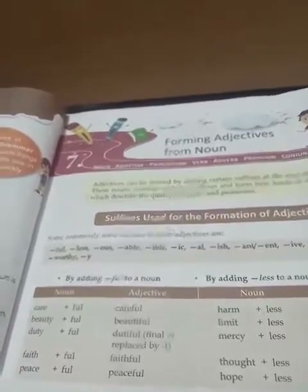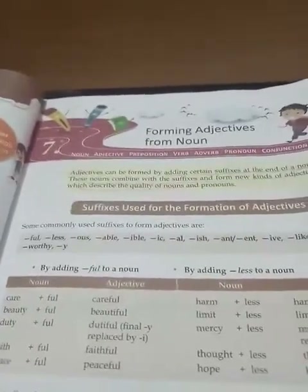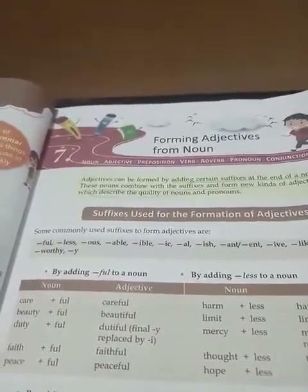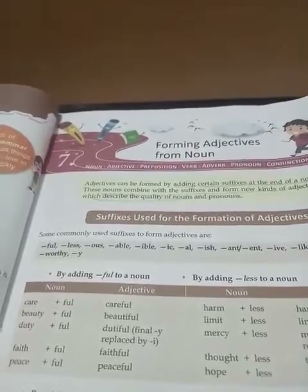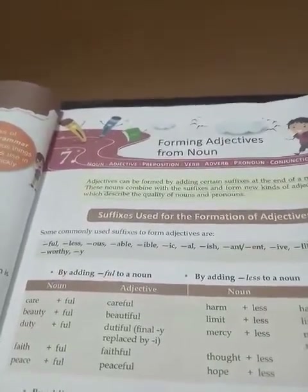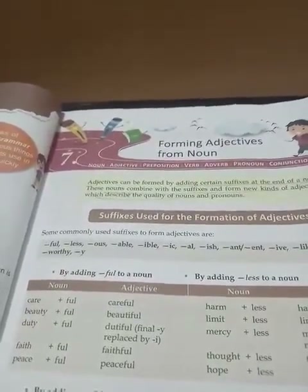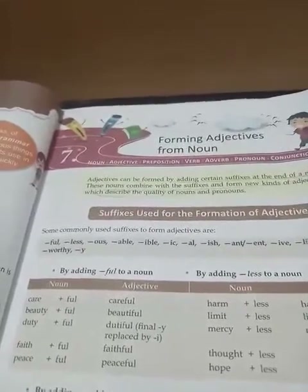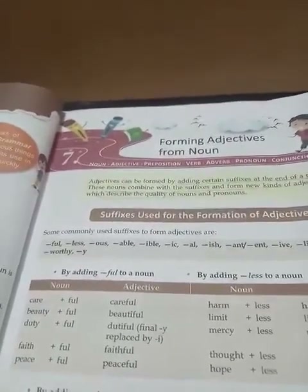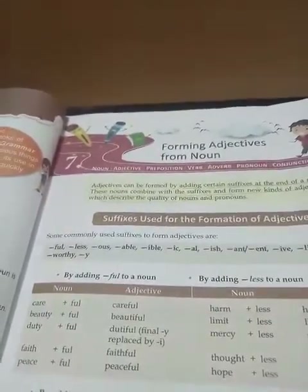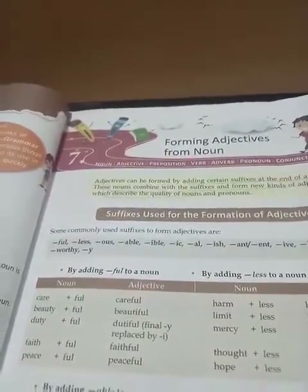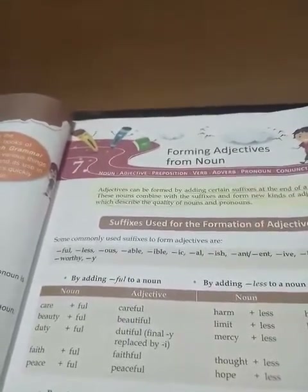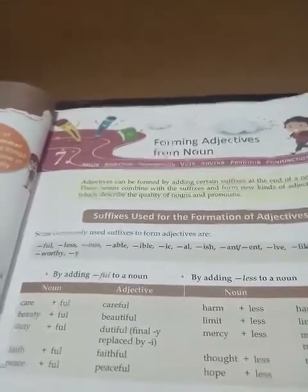Further suffixes include: ANT, IVE, LIKE, LY, and Y. These are the words which we add after nouns to form adjectives.